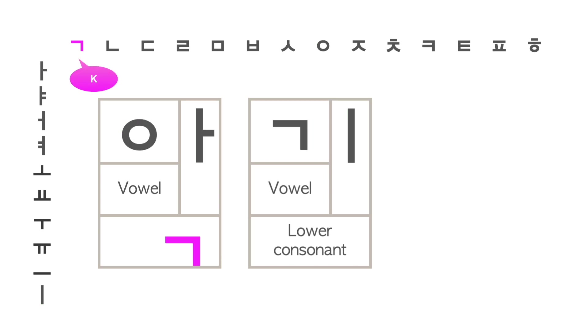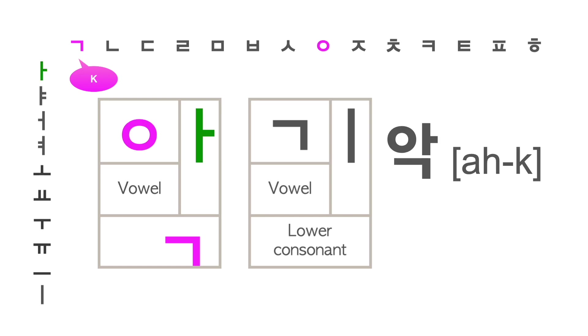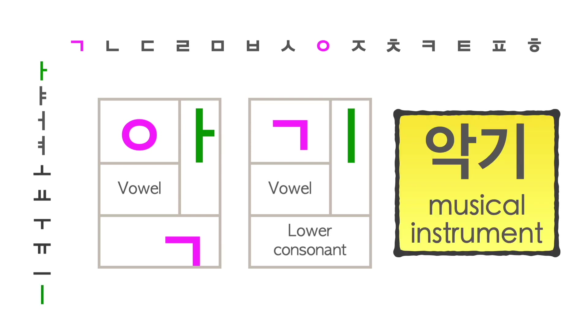Adding the consonant ㄱ as a lower consonant adds a K sound. The first letter is pronounced 아, and together these two letters form the word 악기, which means a musical instrument.